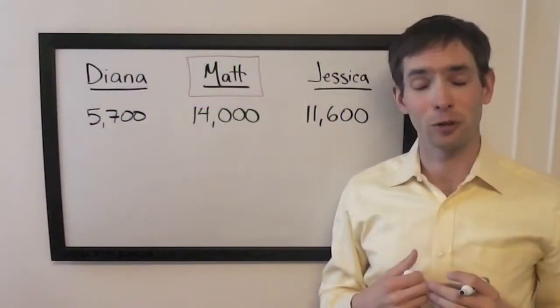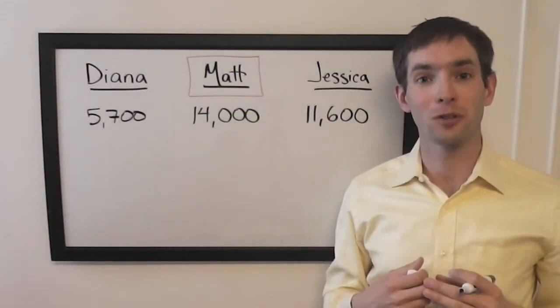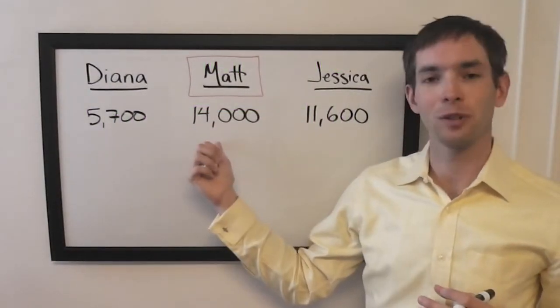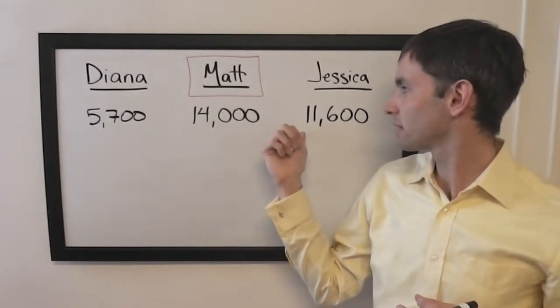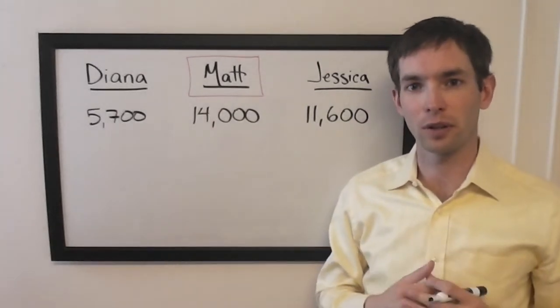It took just one game after Arthur Chu's run for us to have a penultimate wager situation. Belongs to Matt, who's in the lead with 14,000, Jessica's in second with 11,600, and Diana is in third with 5,700.